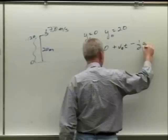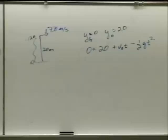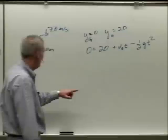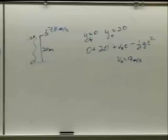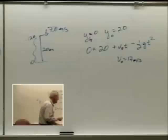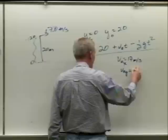A lot of people missed it by letting v-naught equal 17 meters per second. That's a common mistake — 17 is the x-component. We're dealing with the y-direction here, and v-naught-y equals zero.